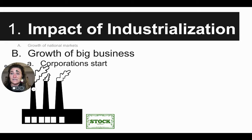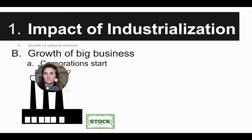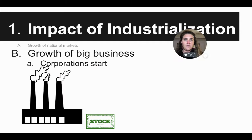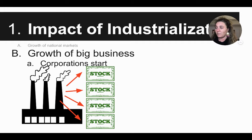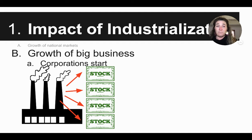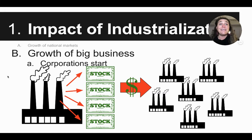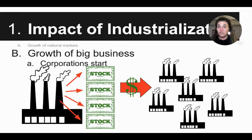Another impact of industrialization is the growth of big business. We see corporations beginning during this time. One of the things that happens with corporations is they begin to actually sell stock in their company — another way we talk about this is 'going public.' Stock means people are buying little pieces of your business, and then businesses can take all that money and begin to expand. This is what we call these large corporations.